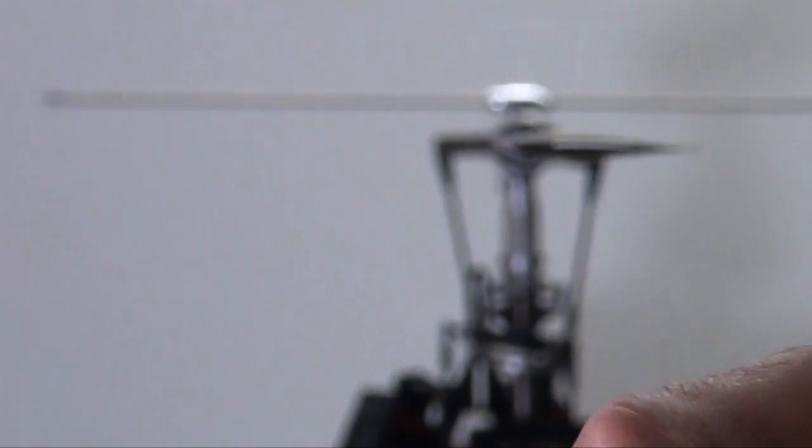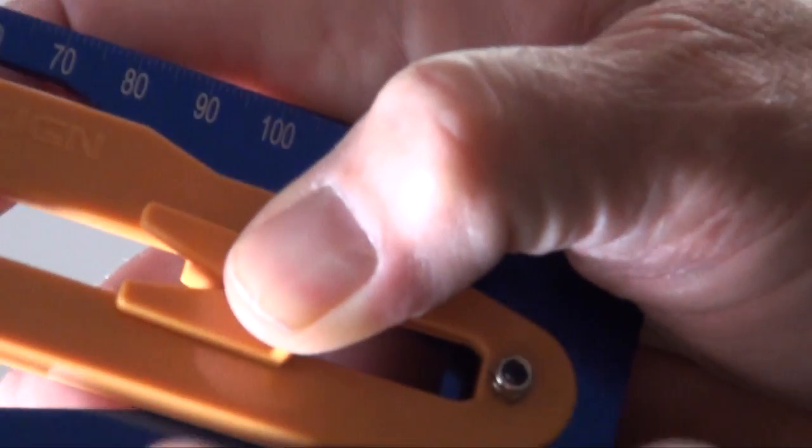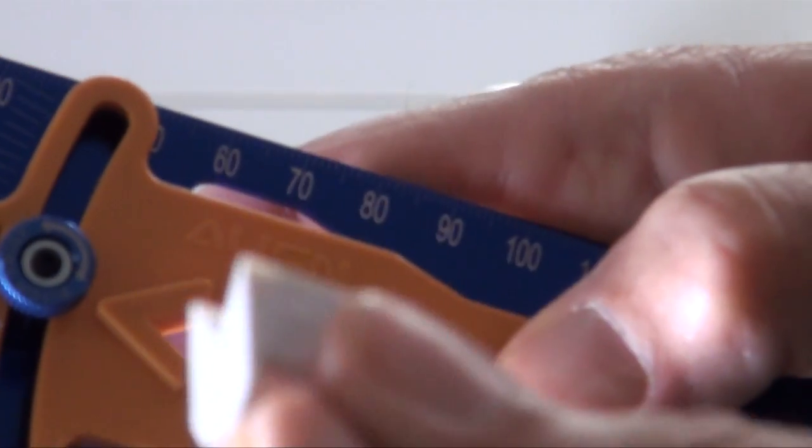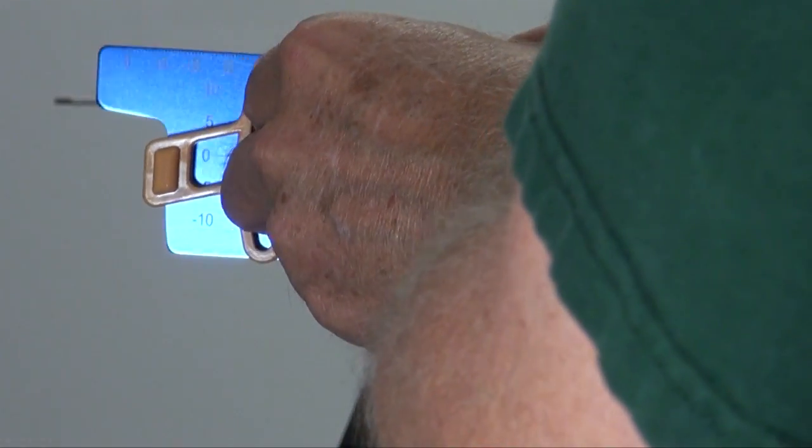There's your pitch gauge. You'll probably have to take this little insert out. Just pop it out of there. And then install the pitch gauge on your blade, right on the end here.